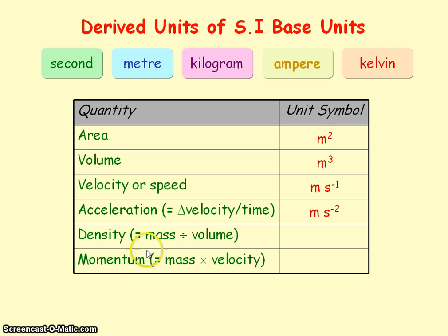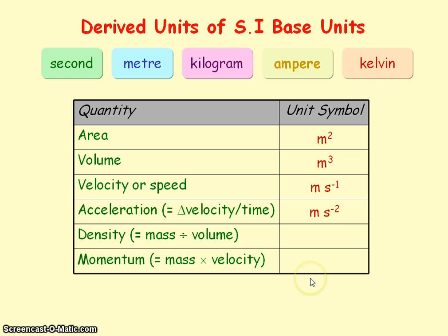Density, which equals mass divided by volume, means the units of density will equal the units of mass divided by meters cubed, so that would be kg per meters cubed.